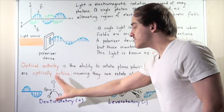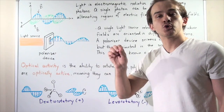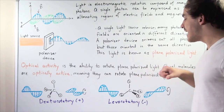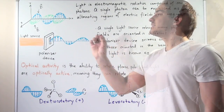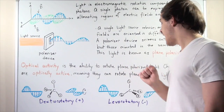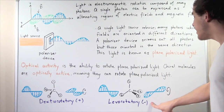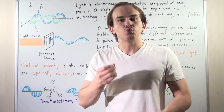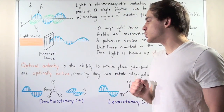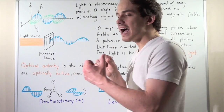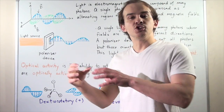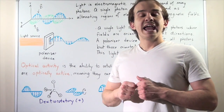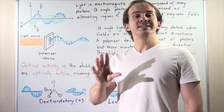The enantiomer of this compound will rotate the light the same amount of degrees but in the opposite direction — the counterclockwise direction. As we look at the incoming light, it will be rotated counterclockwise, and we call that levorotatory, designated with a negative sign. So chiral molecules — molecules that have mirror images — are able to rotate plane polarized light, and we call these molecules optically active. One enantiomer rotates light in one direction; the other enantiomer rotates light in the opposite direction, but the same amount of degrees.